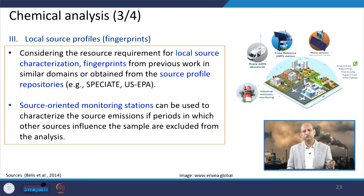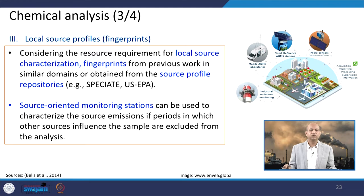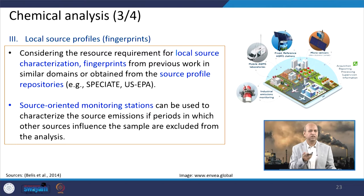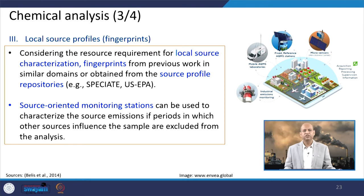Local source profiles — the fingerprints of local sources — are also very important. Resource requirements for source characterization can be obtained from previous work in similar domains or from source profile repositories such as the US EPA or, in India, the Central Pollution Control Board reports. Source-oriented monitoring stations can be used to characterize source emissions, excluding periods when other sources influence the sample.